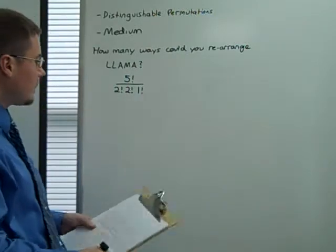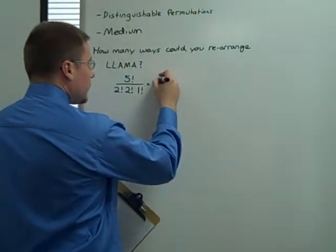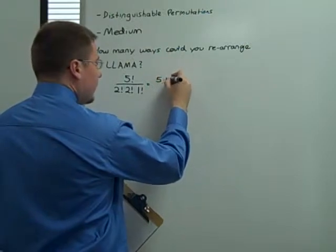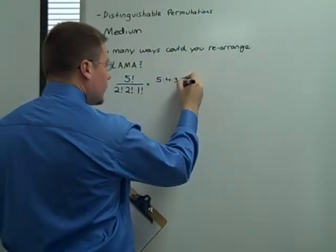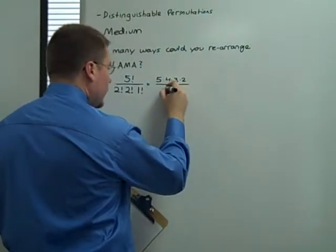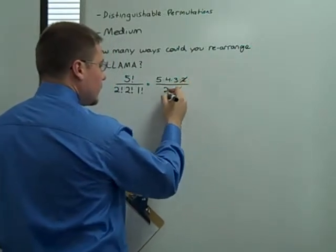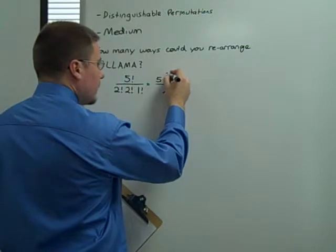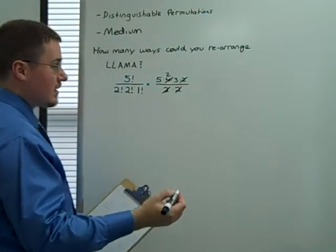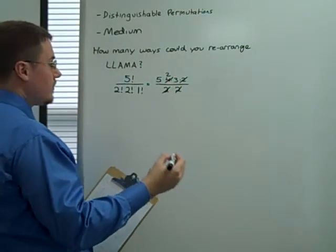So, how would we cancel this? This is 5 times 4 times 3 times 2, all over 2 times 2. So, the 2 is going to cancel with the 2. The 2 is going to cancel with the 4 to become 2. And then you're going to have 6 times 5, or 10 times 3, either way.